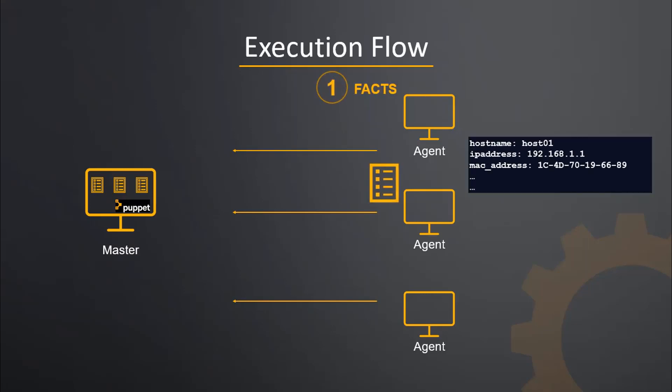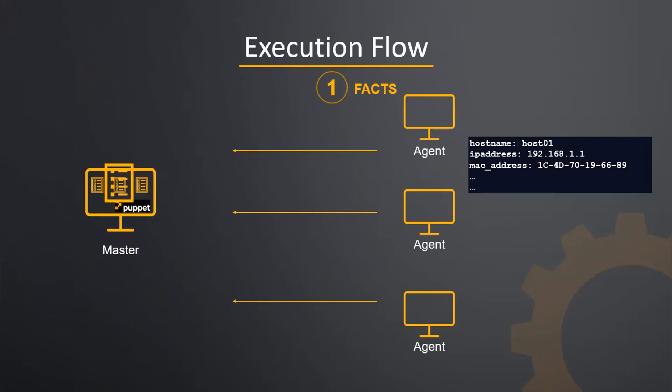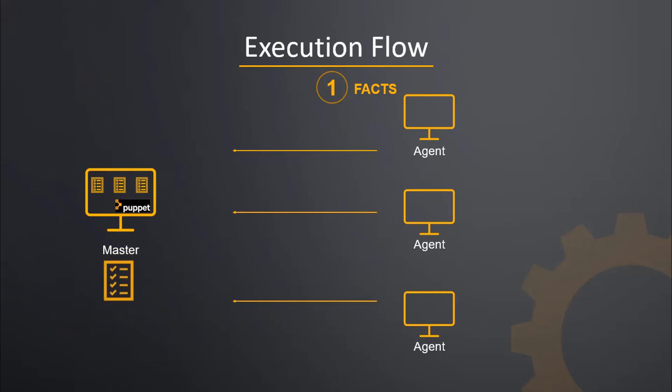Typically, this is a three-step process. Once the connectivity is established between the agent and the master, the agent sends the data about its state to the Puppet master server. These are called facts. This information includes hostname, kernel details, IP addresses, file system details, network details, etc. Puppet uses the facts and compiles a list with the configuration to be applied to the agent. This list of configuration to be performed on an agent is known as catalog.